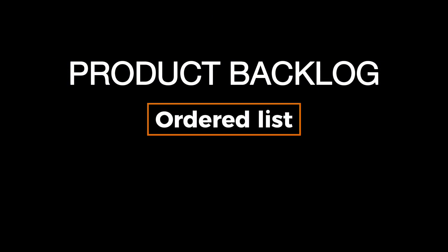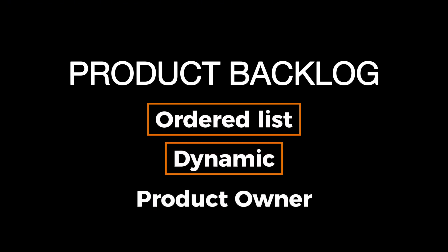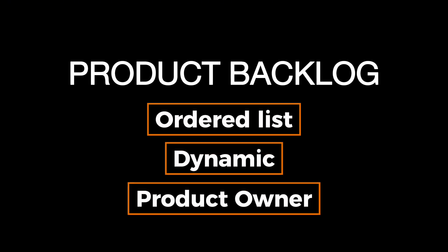The Product Backlog is an ordered list of everything that might be needed in the product. It's dynamic, meaning it evolves as the product and its environment do. The Product Owner is responsible for the Product Backlog, ensuring it's clear, visible, and prioritized.